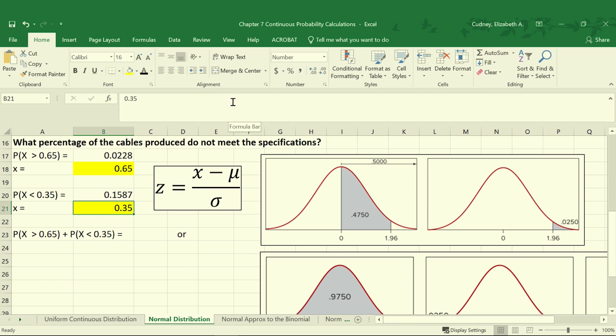That gives us a probability of 0.1587 or 15.87% chance that a cable will be less than 0.35. To get the full probability that it's outside of the specifications, we're going to add together the probability that it's greater than 0.65 and less than 0.35. Here we're adding together cells B17 and B18 to get the total probability. And that is 0.1814 or 18.14%.